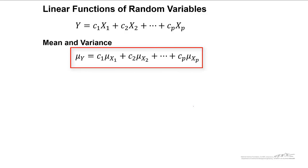The mean of y is just c1, the constant there, multiplied by the average of x1, plus the same thing for all the other terms. So really what this means is if y is composed of a linear combination of a bunch of different variables, the mean is going to be related similarly.